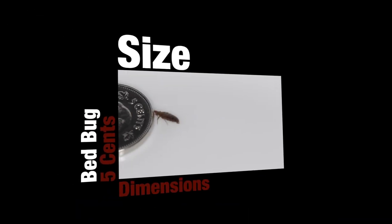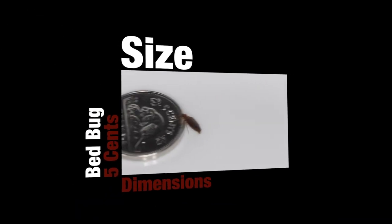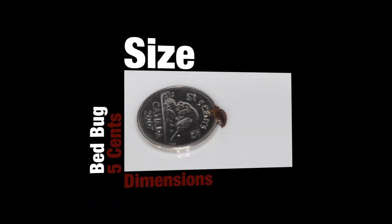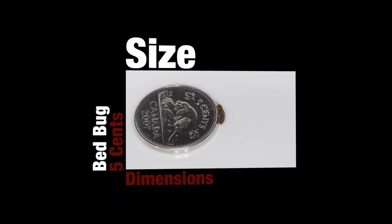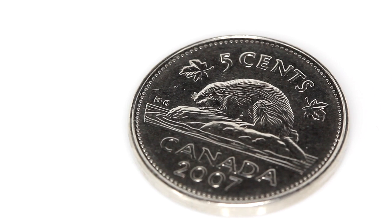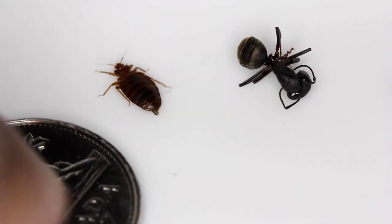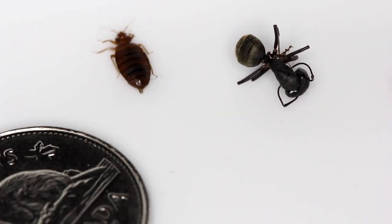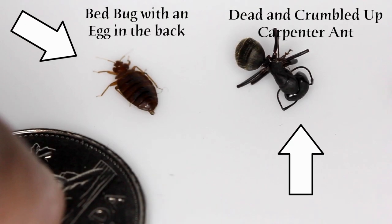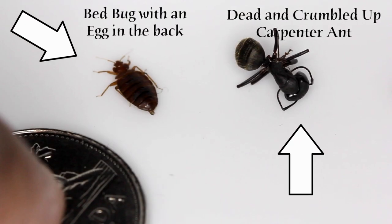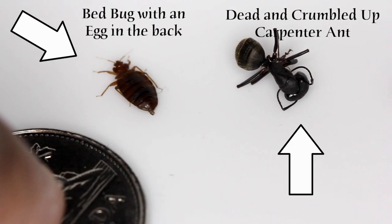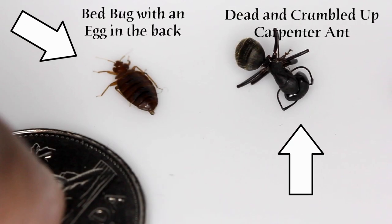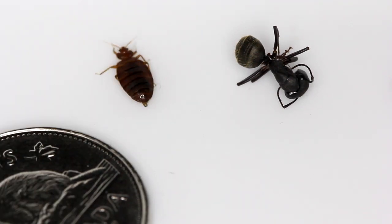Welcome to this presentation on the size and dimensions of bed bugs. Here you see a quite well-fed bed bug with a protruding egg in its rear. Besides it is a dead, crumbled carpenter ant and a five cent coin for scale.